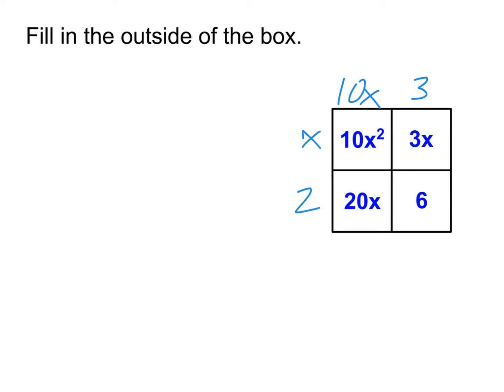So then check each box. Make sure it all looks correct. But yes, 10x times x is 10x squared. 3 times x is 3x. 20 times 10x is 20x. And 2 times 3 gives us our 6. So that's all looking good. Now, this has all been kind of the warm-up getting used to the box and how it gets used.